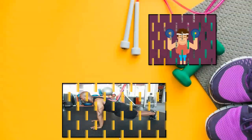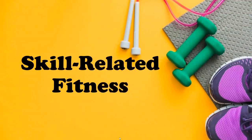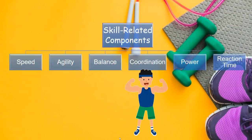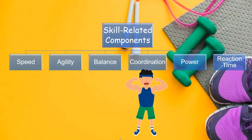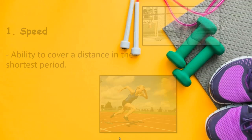Now let's proceed to skill-related fitness. Under skill-related fitness we have six components: speed, agility, balance, coordination, power, and reaction time.